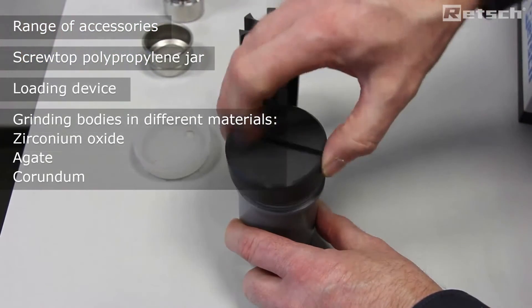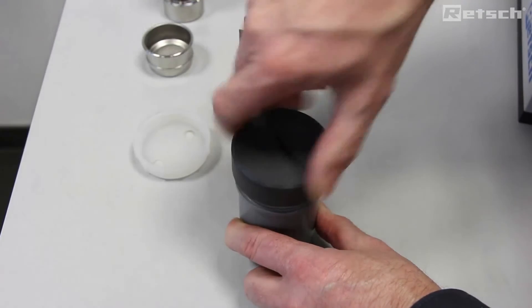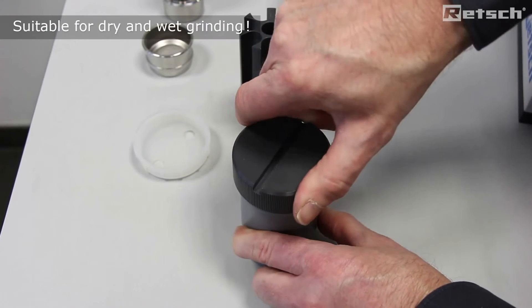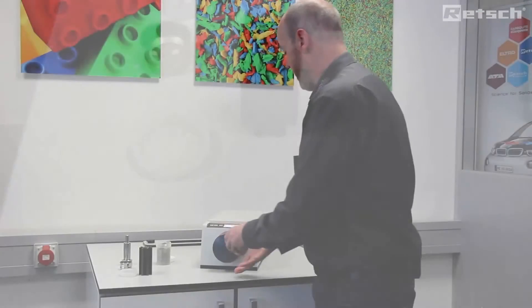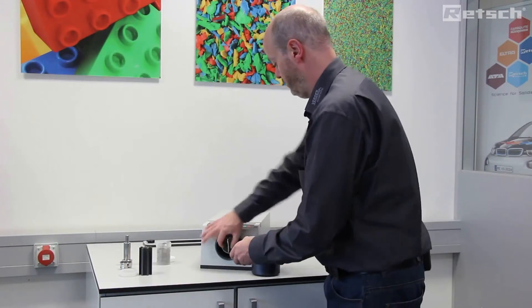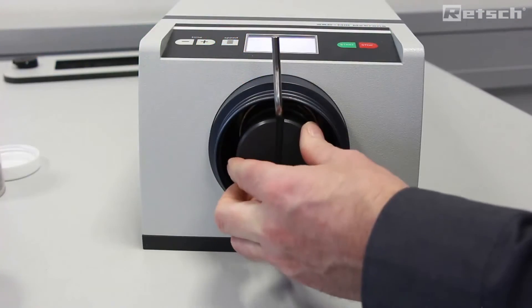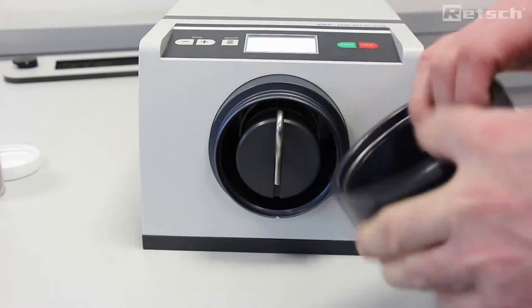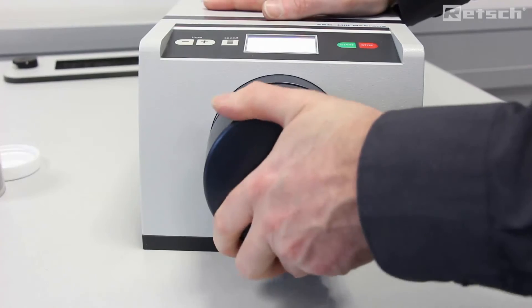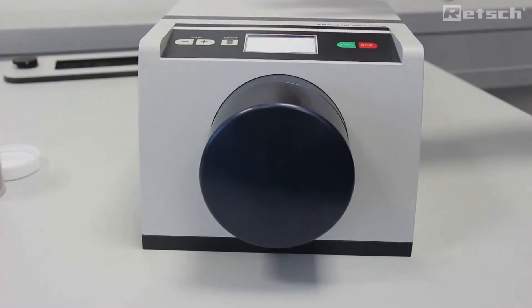We simply load up the cylinder with the guide, add the material to be ground, tighten the cap, and load the cylinder up. The sample is now ready to be run.